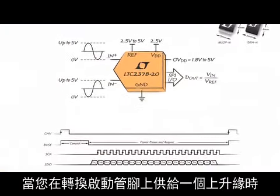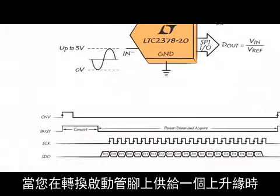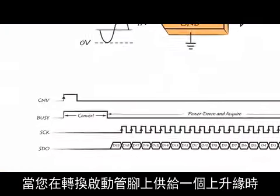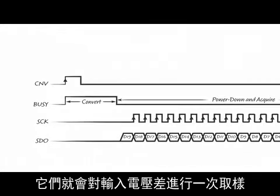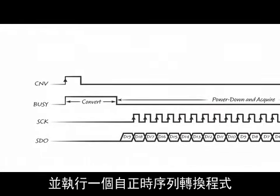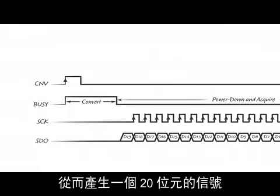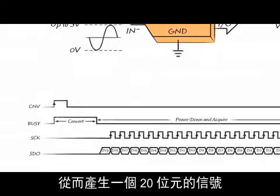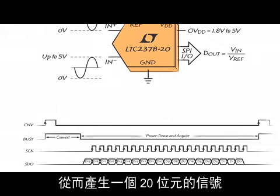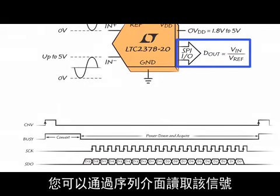When you provide a rising edge on a convert start pin, they sample a differential input voltage and perform a self-timed sequential conversion process, resulting in a 20-bit word that you can read on a serial interface.